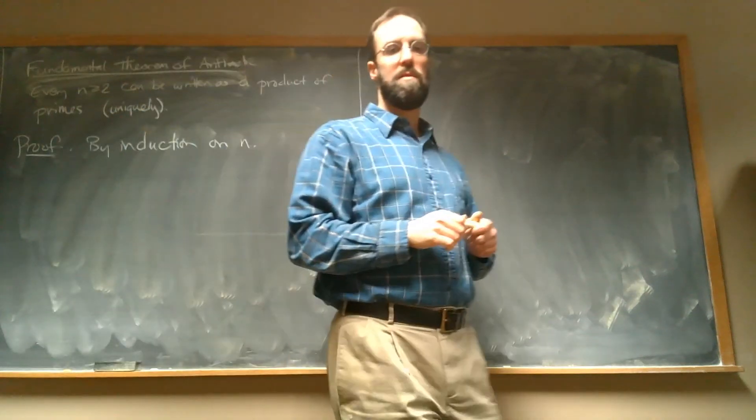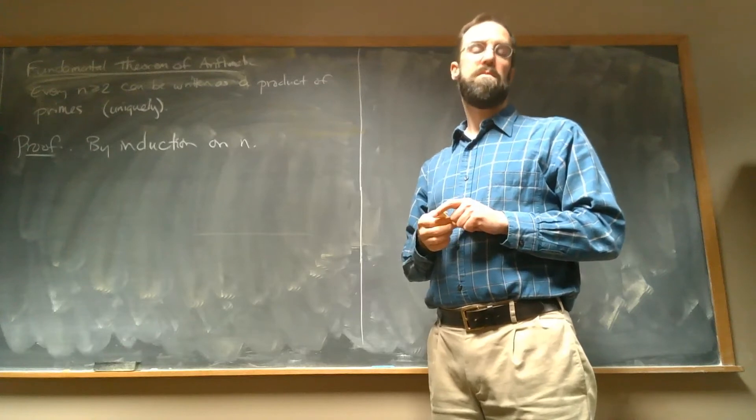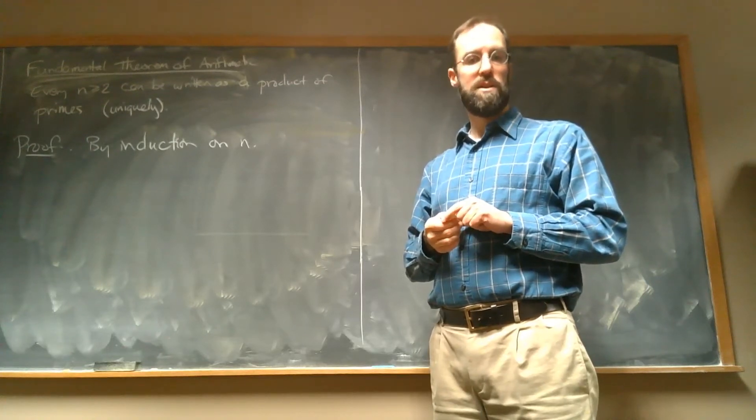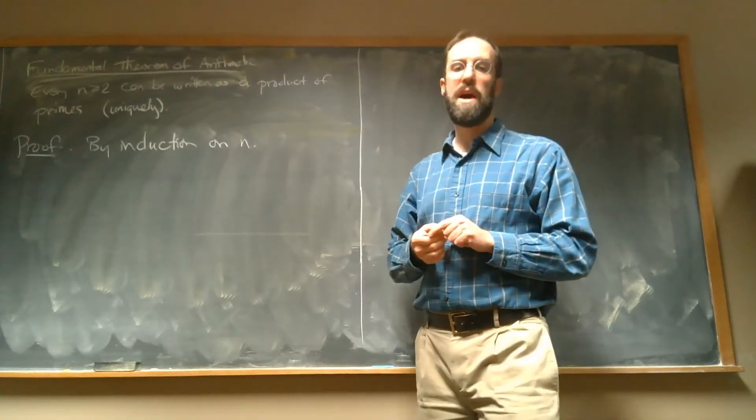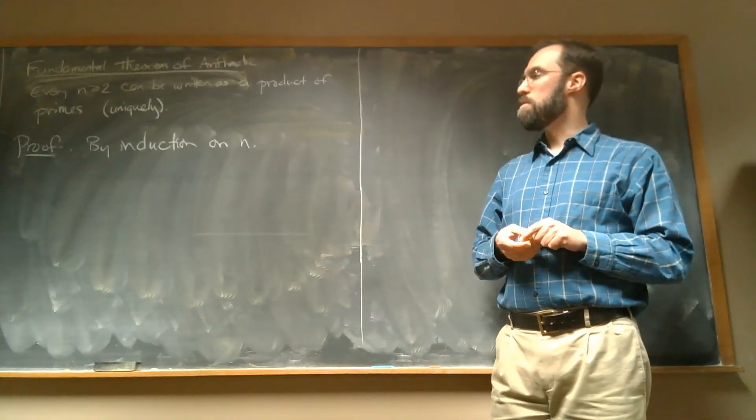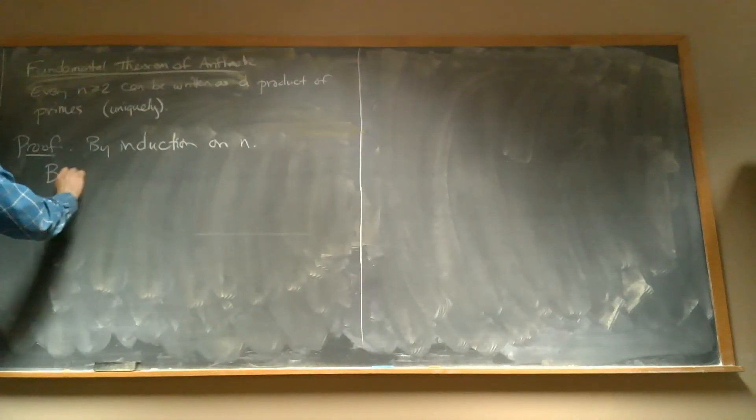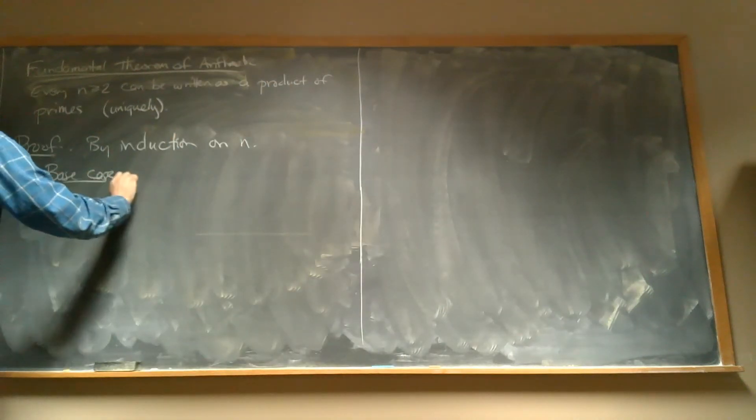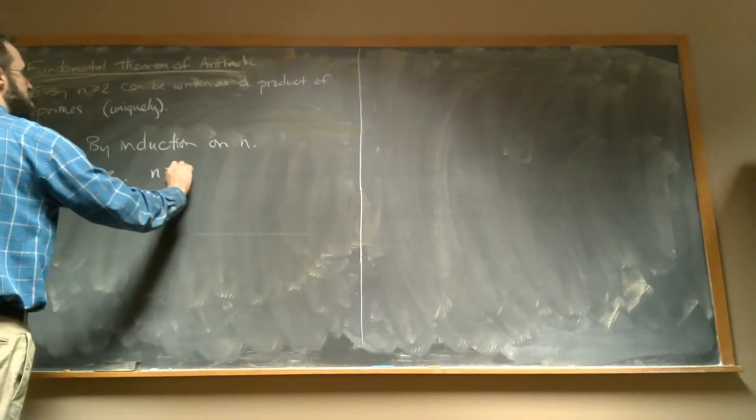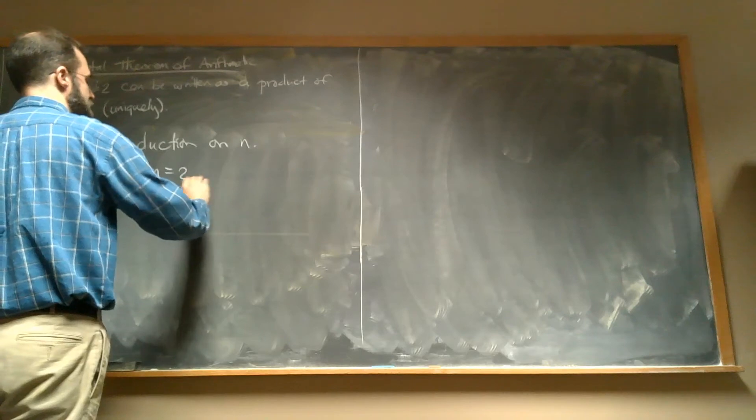So our proof is by induction on the number N. And I'm going to start this proof as just a proof by regular weak induction. And we'll see what goes wrong and we'll see why actually we need strong induction in order to prove this. So in our base case, when N equals 2, well, 2 is prime.